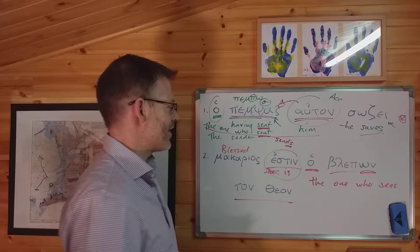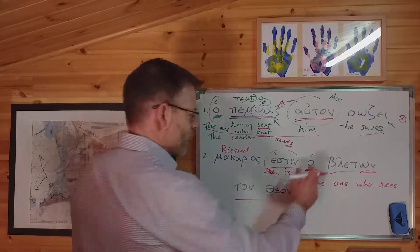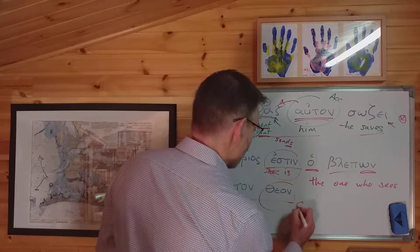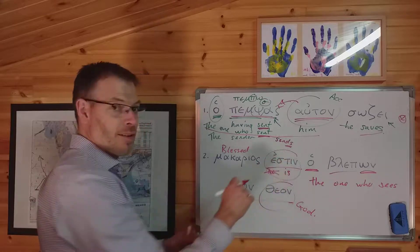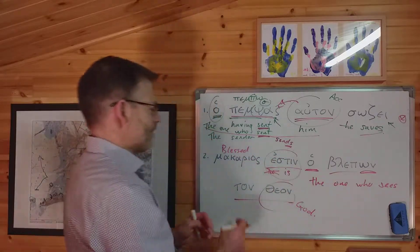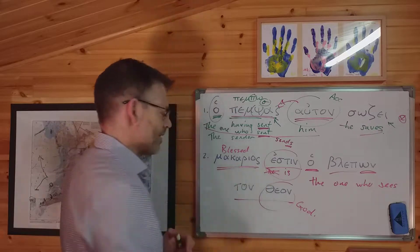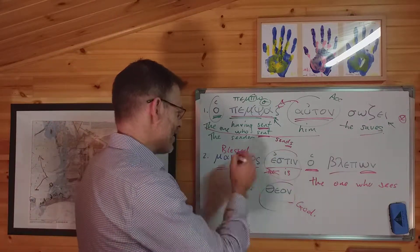So what does ton theon go with then? Well, it's obvious. I'm sure you've seen this already. Just as we've got in the previous example, this participle has an object. It is the one who sees God. The one who sees God is the subject, is, complement, makarios, blessed. The one who sees God is blessed.